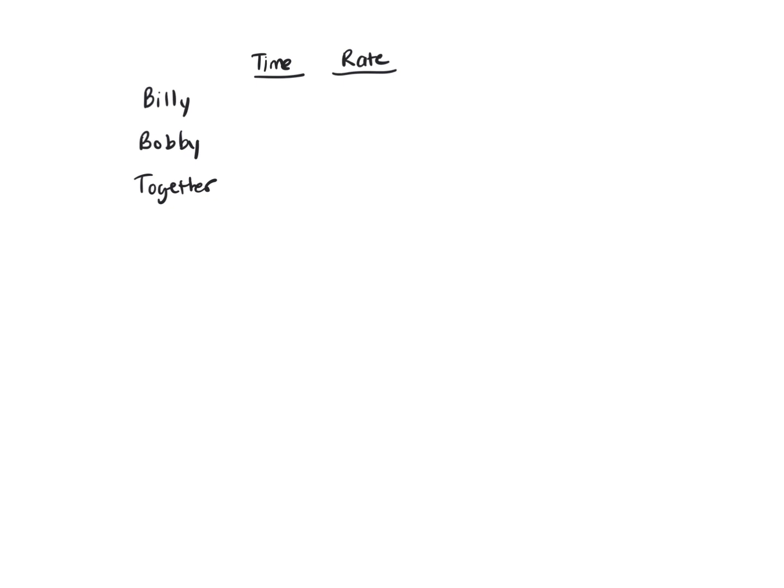So I'm going to put 98 minutes here, and my first column is always my names, whether it's pipes or people, and I always have it together.